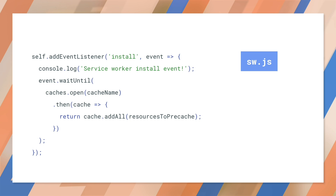Just a quick aside here. To conserve resources, service workers terminate into an idle state when they aren't in use. Because of this potential for termination, we wrap the Cache API code in the waitUntil method. The waitUntil method ensures that our service worker doesn't preemptively terminate while waiting for the asynchronous caching logic.